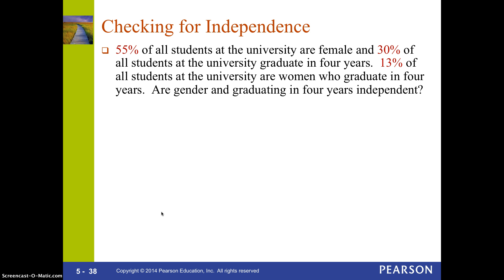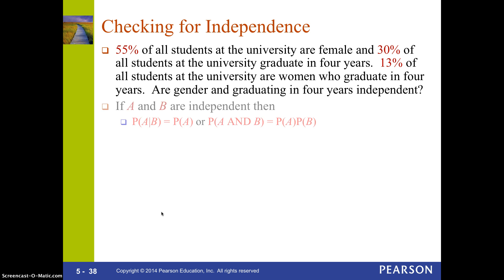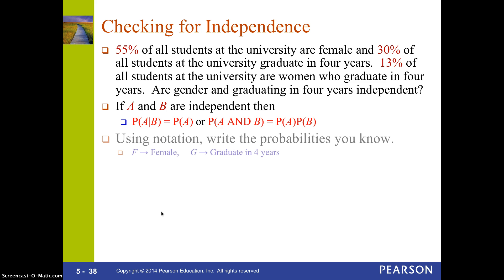30% of all students graduate in four years, so the probability that you graduate in four years is 30%. And 13% of all students at the university are women who graduate in four years — that's an 'and' statement — so the probability that you're female AND graduate in four years is 13%.